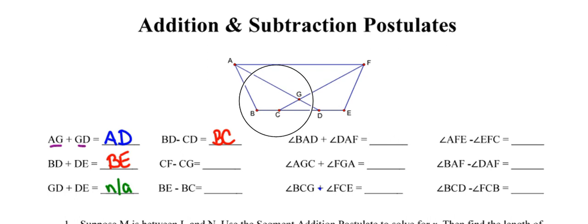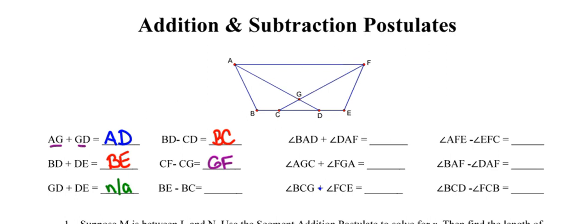We can approach the others very similarly. If we take segment CF and from it subtract away the piece represented by CG, we're left with the piece between points G and F. And then lastly, if we take the distance between points E and E — the whole bottom — and take away the piece represented by the distance between points B and C, we're left with the piece that starts at C and ends at E.